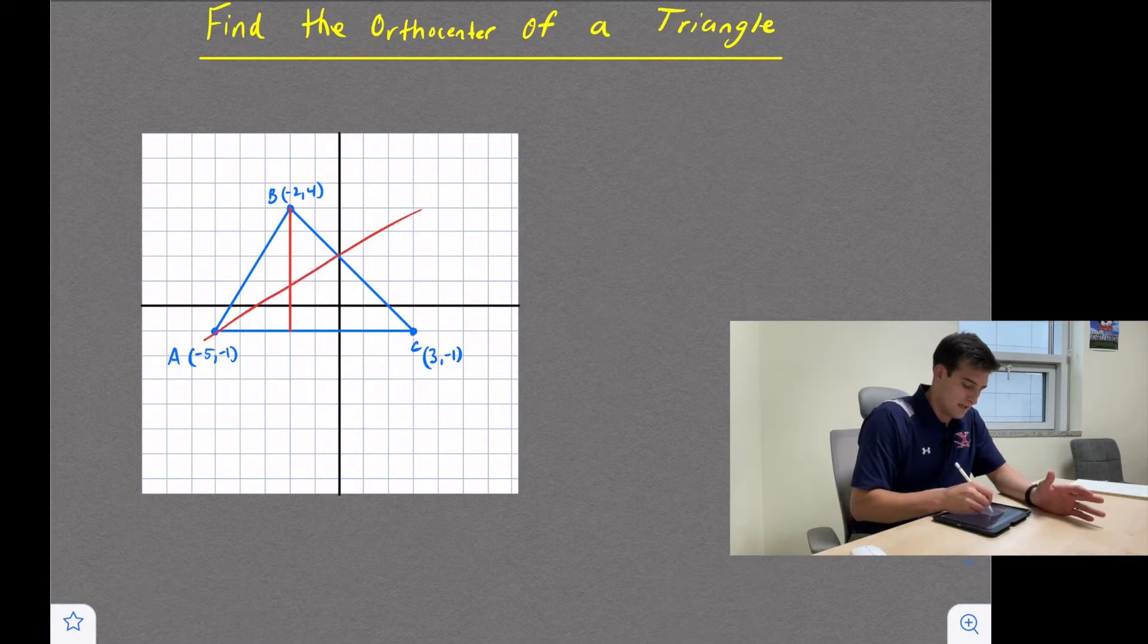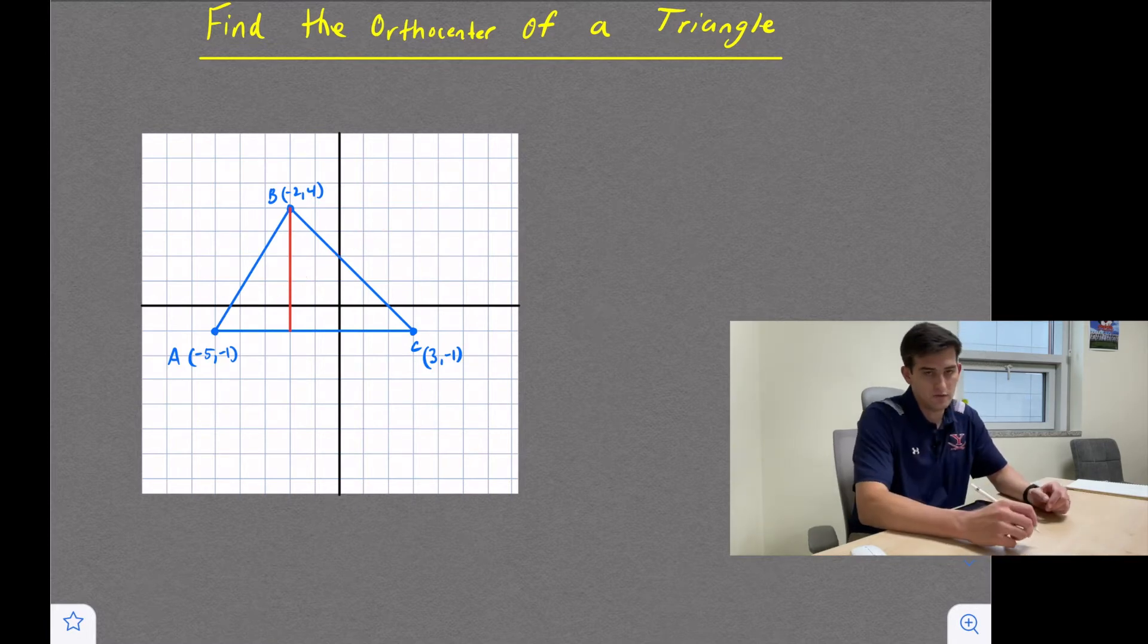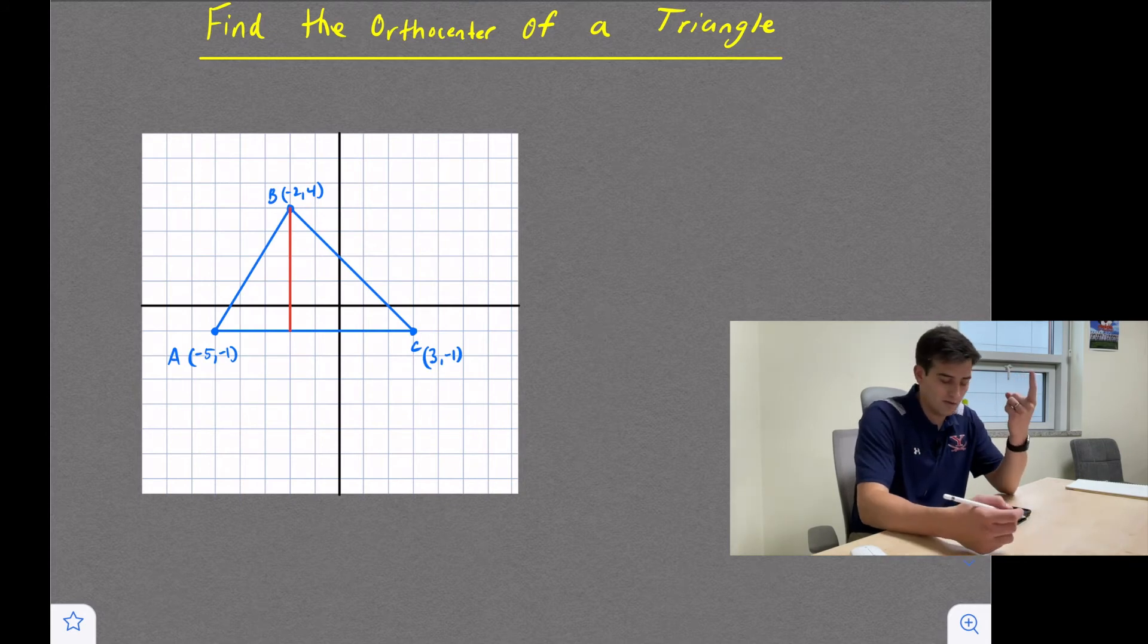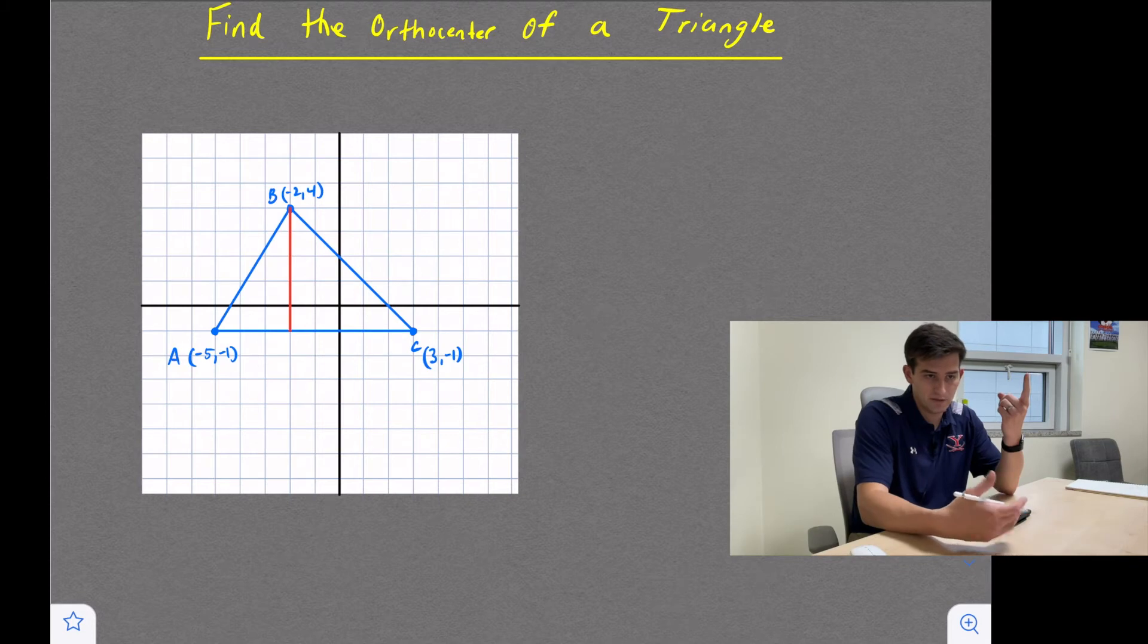To draw the altitude from A to BC, number one, it has to go through point A, so we already know that, but then it has to be perpendicular to side BC. So perpendicular, think about the slope. Slope has to be opposite reciprocal, so let's find the slope of line BC first.